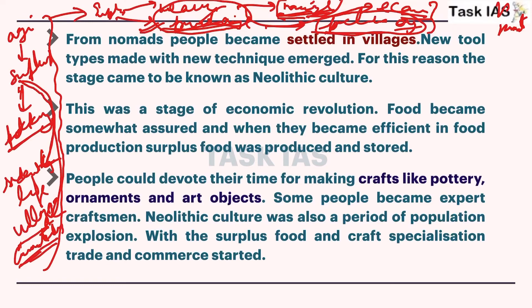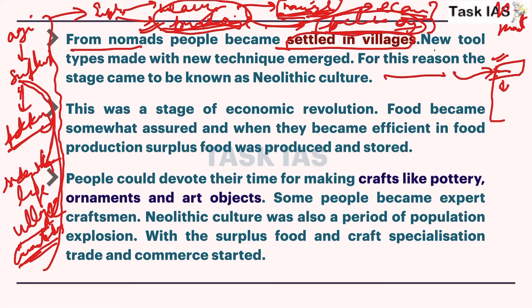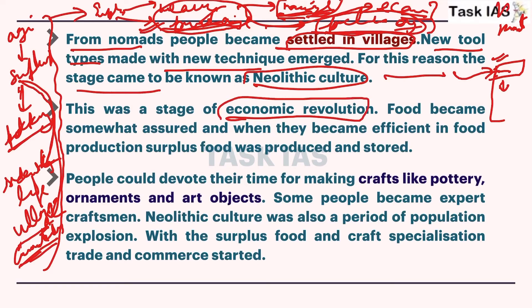Once you have this broader understanding, you can correlate and write these examples in social anthropology - in questions of social anthropology, you can start with evolutionary features to provide a historical introduction and then continue to present. From nomadic people, people became settled in villages. New tool types made with new techniques - more sharp and more efficient tools - gave the stage the name Neolithic culture. This was a stage of economic revolution, called a revolution by Gordon Childe, who called it the first revolution in humankind.